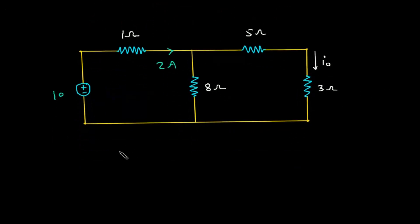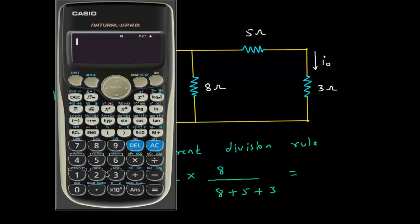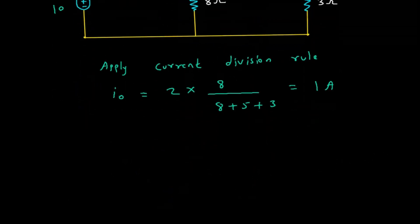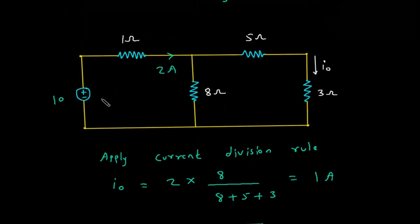Now we have to find I.O. So apply the current division rule. So I.O is equal to 2 into 8 by 8 plus 5 plus 3. This is 1 Ampere. Therefore I.O is equal to 1 Ampere when the input voltage is raised to 10V.